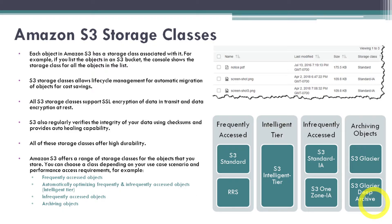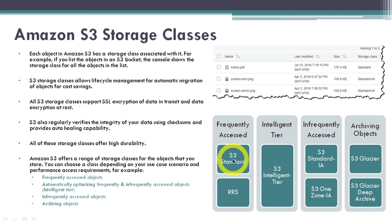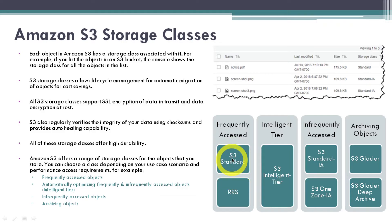Storage classes are categorized into different types. If you have a data access pattern where you are going to access your data very frequently, you can use the frequently accessed storage class. In the frequently accessed tier there are two types of storage classes: S3 Standard and RRS. You can use either of these for your frequently accessed data.